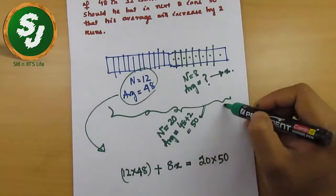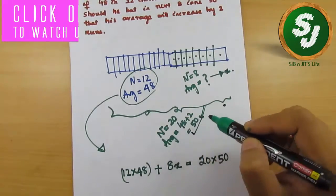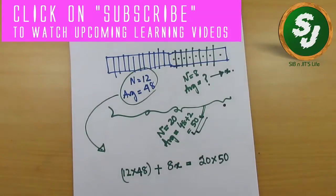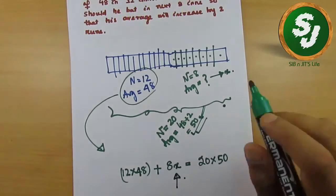Why? Because total number of matches is 20 now and his average will increase by 2 runs, that means it is 50. Now we will calculate and find the value of x. This is how this question is solved.